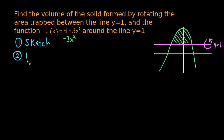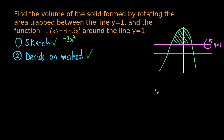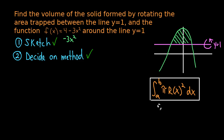Step 2 is to decide on a method. We're going to use the disk method. In future problems we'll have to decide between the shell method, washer method, or disk method, but for now this is a disk method example. Once you decide on a method it's a great idea to write down the formula. The disk method formula when rotating around the x-axis or any horizontal line is our guide here, since we are rotating around a horizontal line.